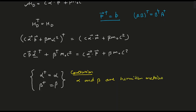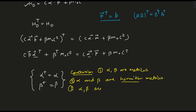As we discussed previously, alpha and beta are matrices because they anti-commute. The first conclusion from the previous video was that alpha and beta are matrices. Now we conclude that alpha and beta are Hermitian matrices. Since they are Hermitian matrices, they must be square matrices. So alpha and beta are square Hermitian matrices.